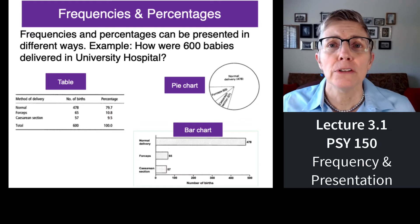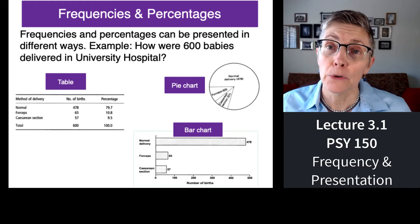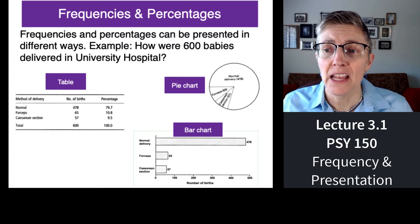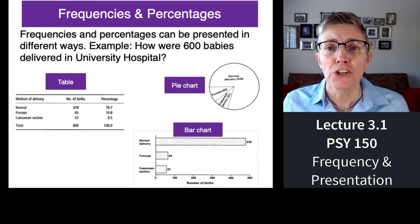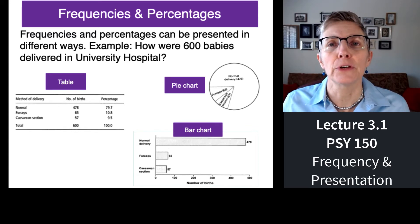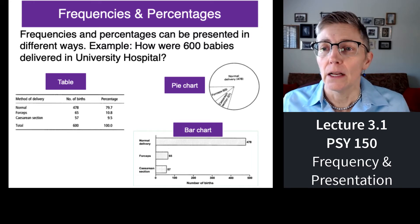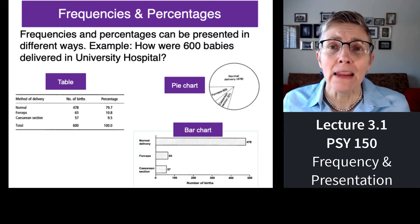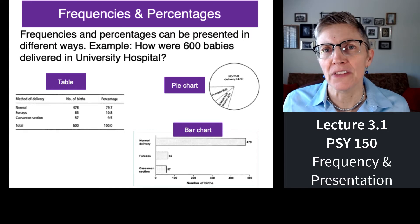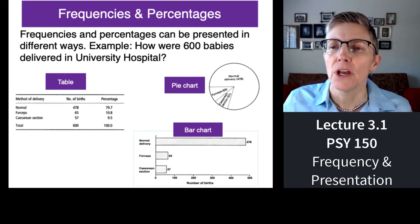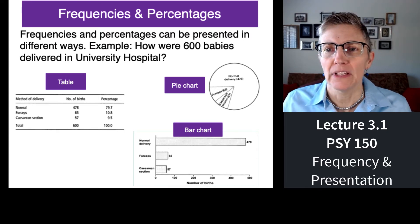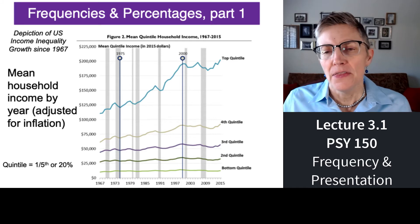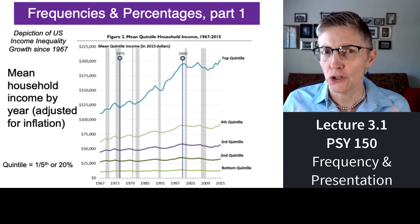Frequency information and percentages can be displayed in any number of ways. You could present it as a table entirely with numbers. You could present it as a bar chart, which is essentially a kind of frequency distribution turned on its side. Pie charts are another way to do it. There's no right or wrong way. But how you present the data has a big impact on the ways in which people interpret the data.